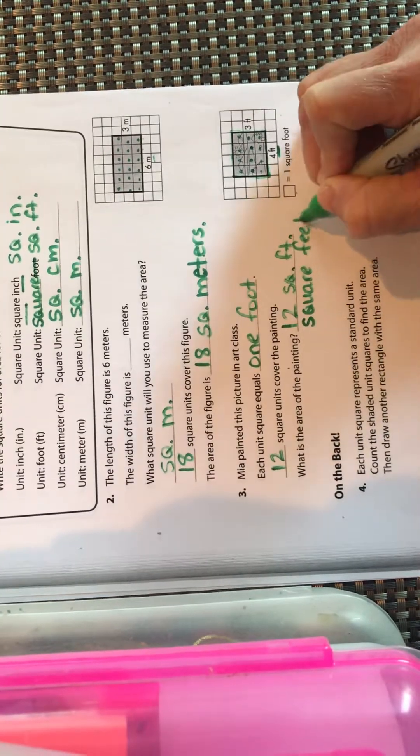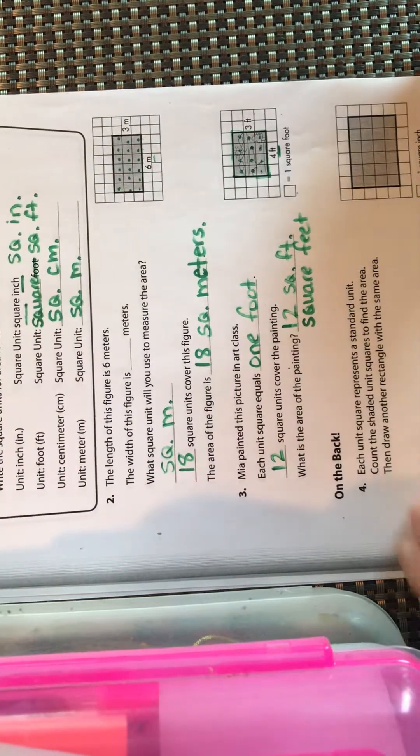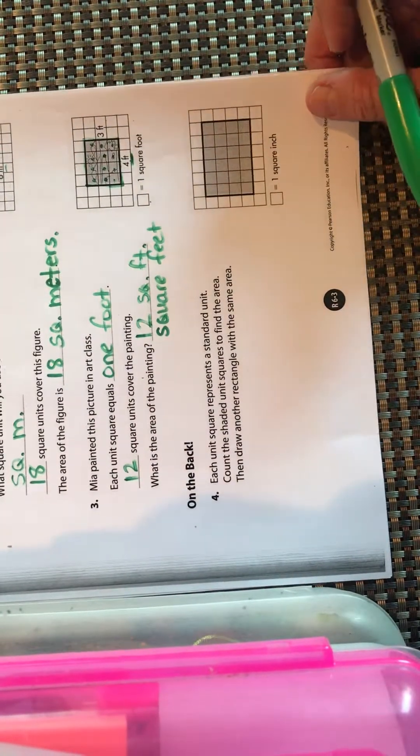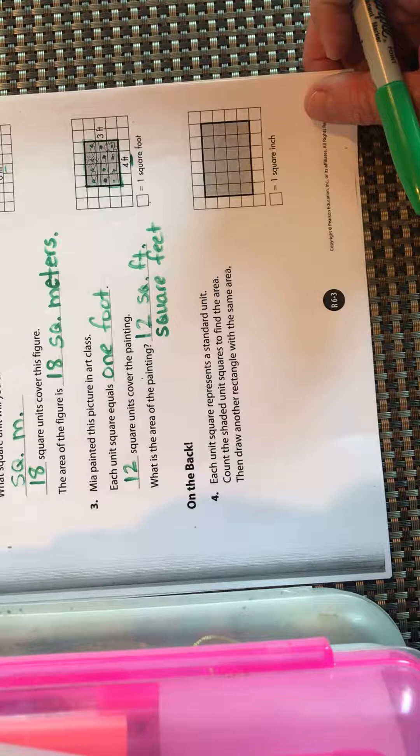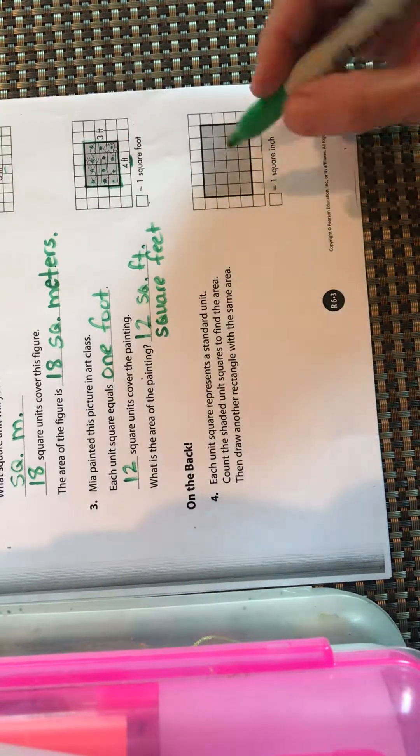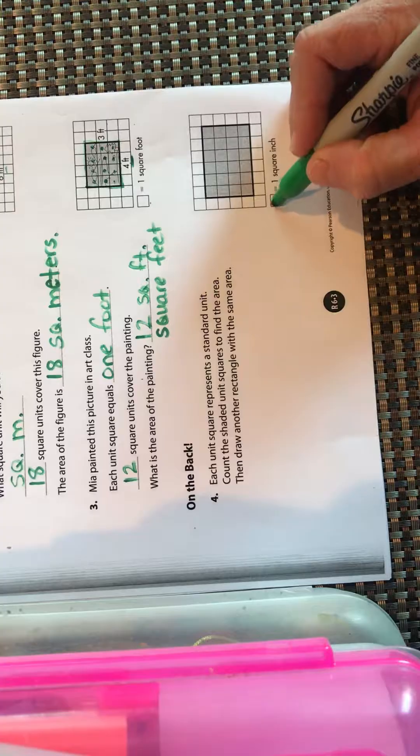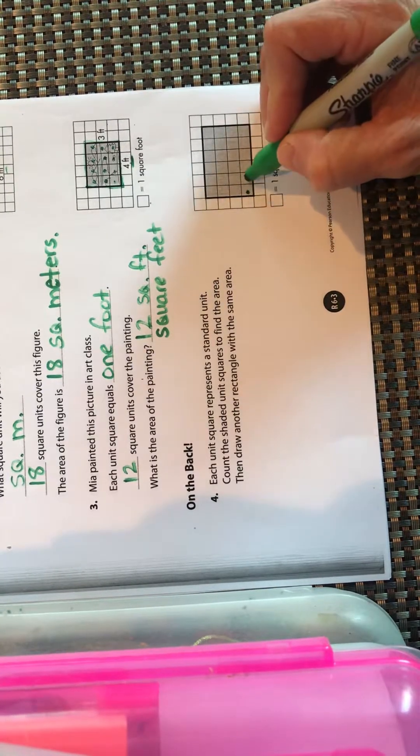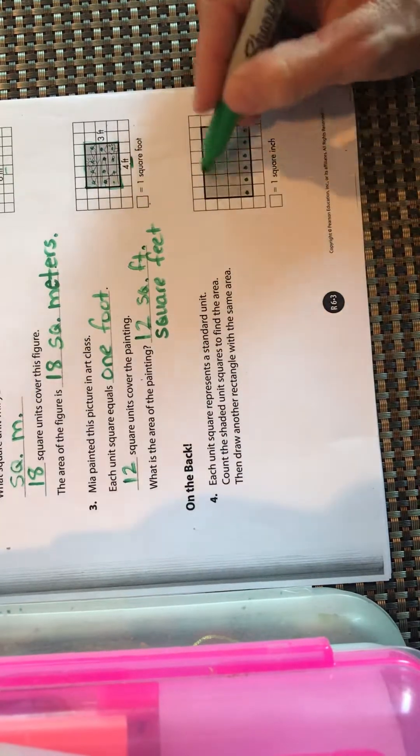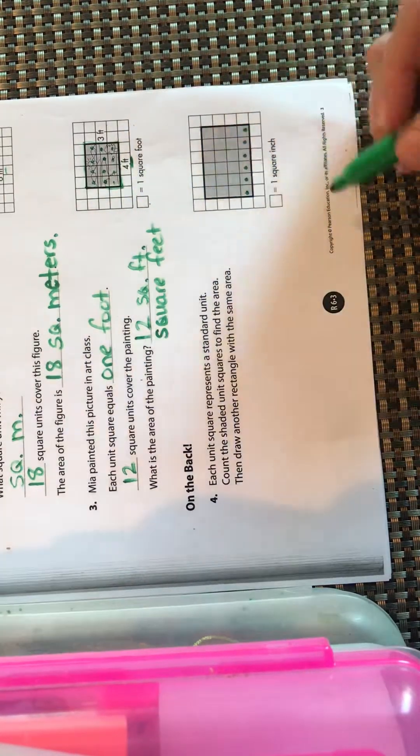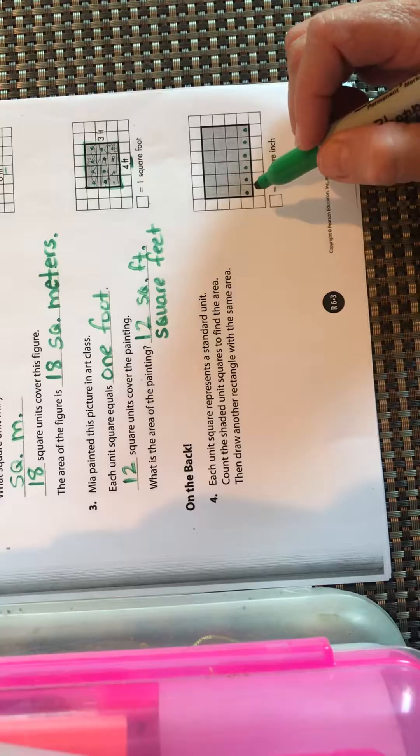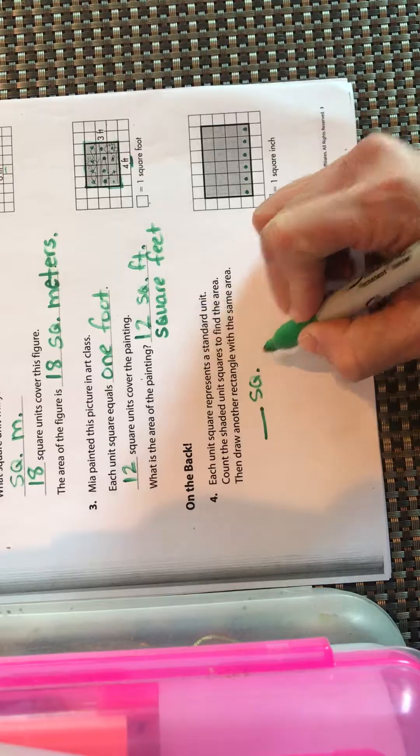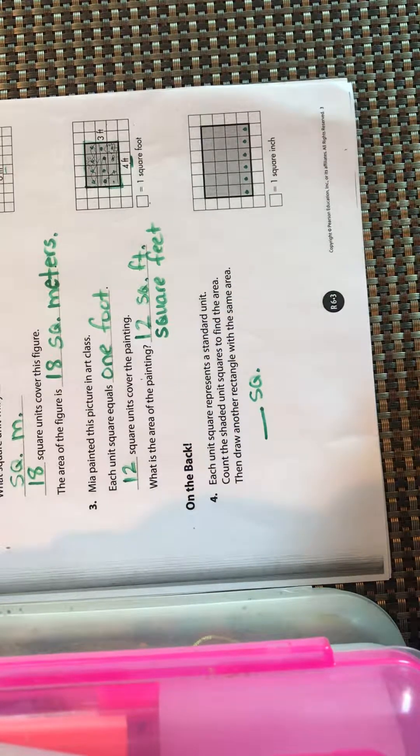The bottom one: each square unit represents one standard unit. Count the shaded unit squares to find the area. This little box is the same size as that one. Count how many shaded areas, how many shaded squares you have, and write that right there, square something. Pause the video and do that.